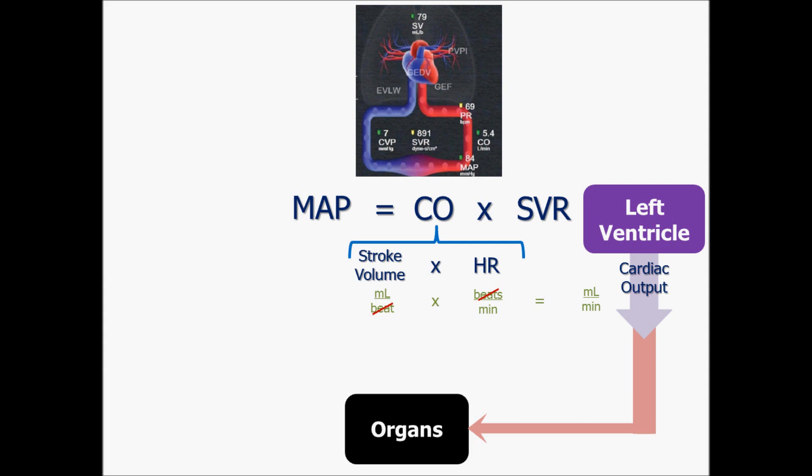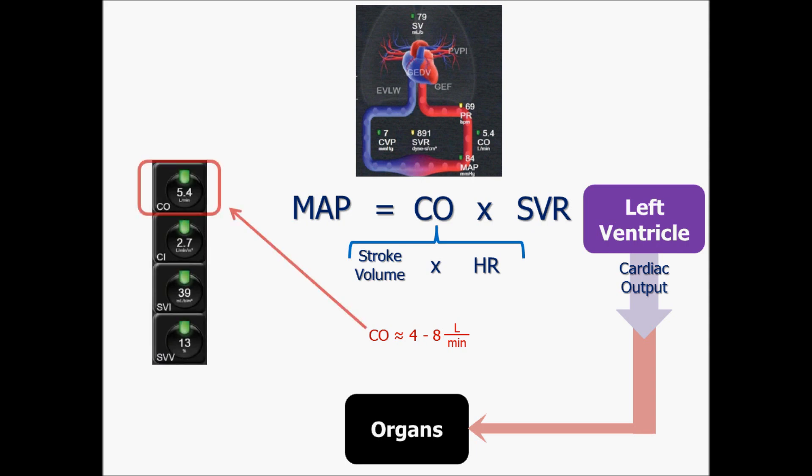Now, when we're talking about volumes over one minute, they're going to be large volumes. And so we convert milliliters to liters per minute. And so now we have cardiac output, which is usually about four to eight liters per minute. That's the normal range. This is another parameter that you can monitor on the hemodynamic monitor.